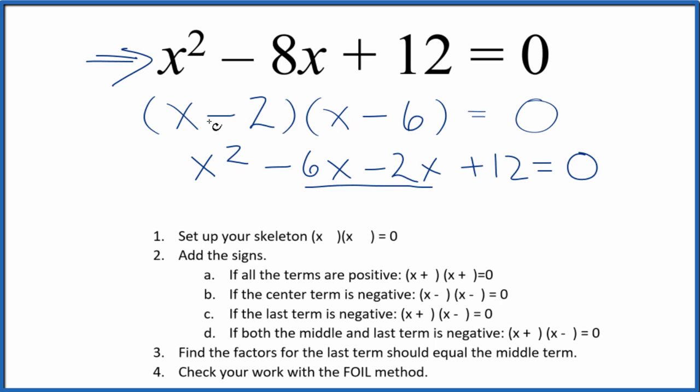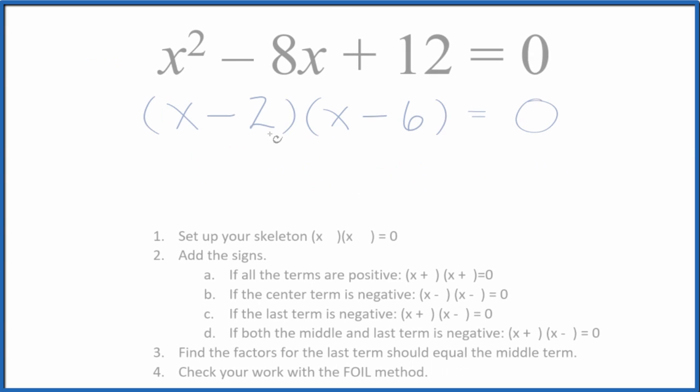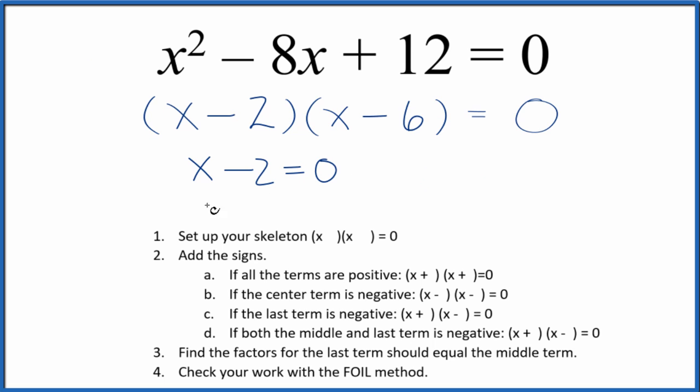Let's find the values here for x that'll make this statement equal 0, make it a true statement. So we could say x minus 2 equals 0, x equals 2, and here x minus 6 equals 0, x would equal 6.